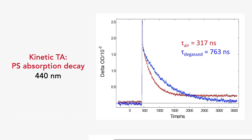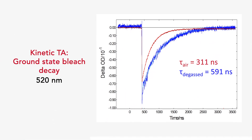We can use the PMT detector to investigate the decay kinetics in detail. First, we looked at the time-resolved absorption of the triplet at 440 nanometers. There is a clear difference between the degassed and the air-saturated solution, which supports the spectral data. Likewise, the ground-state bleach shows a longer decay for the degassed solution compared to the air-saturated solution.